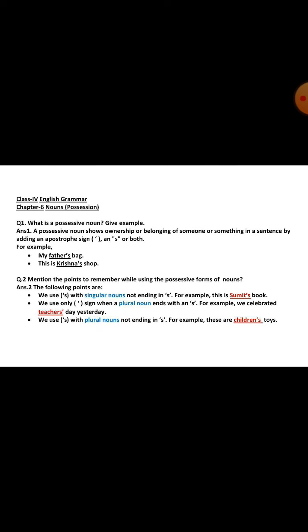Now the next question: mention the points to remember while using the possessive forms of nouns. The first point is we use apostrophe S with singular nouns not ending in S. For example, 'This is Sumit's book.' The word Sumit, S-U-M-I-T, is a singular noun — the name of one boy — and it does not end in the letter S. So that's why we use the apostrophe sign and an S here.